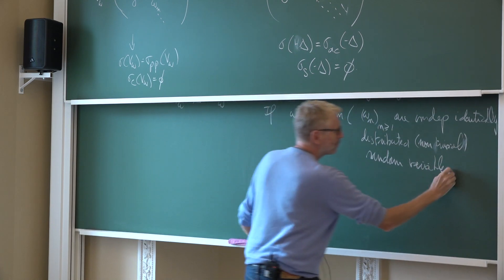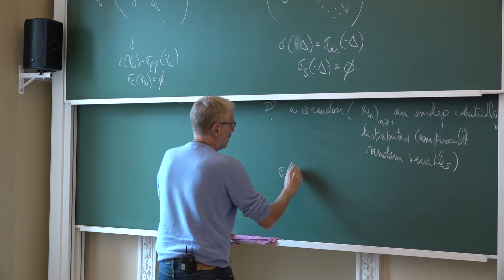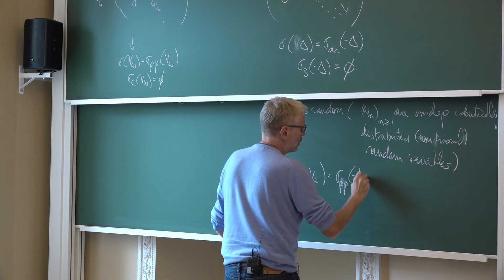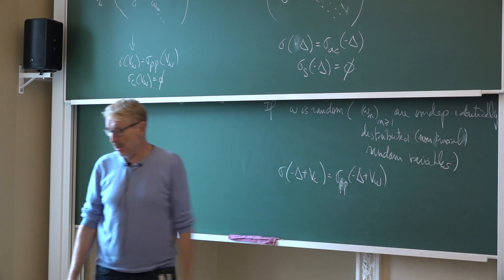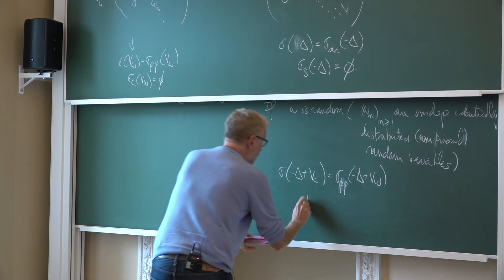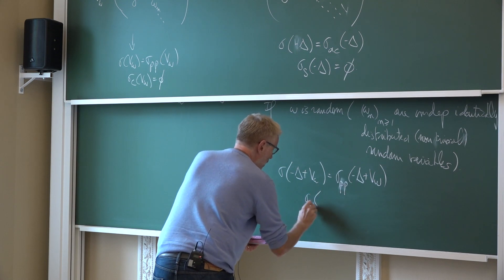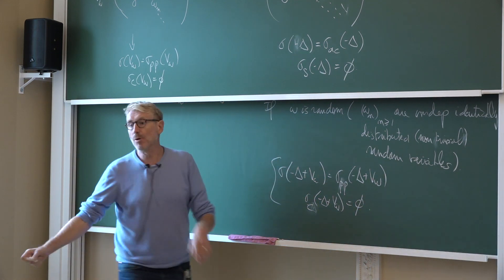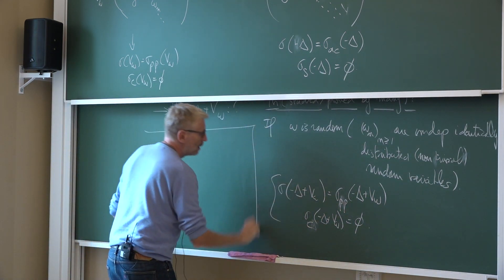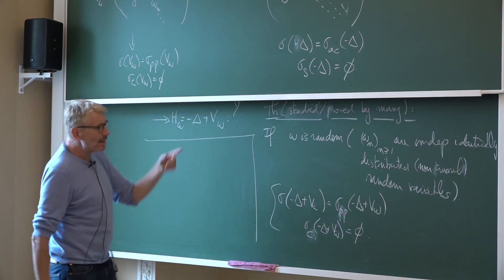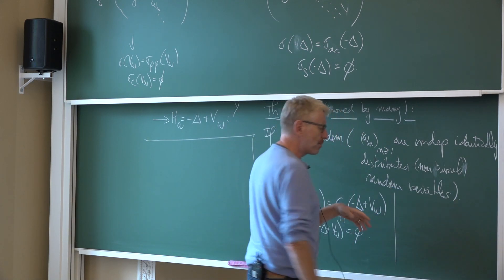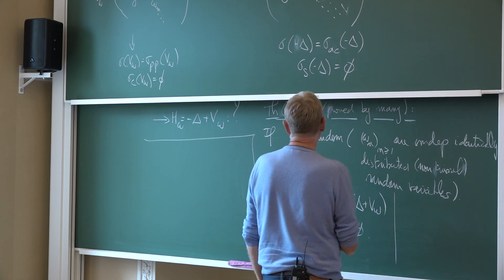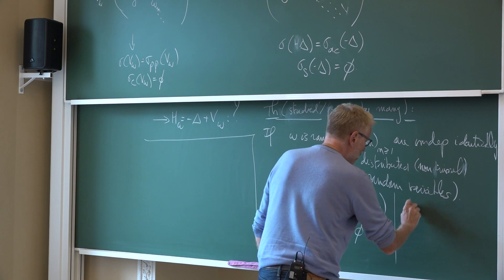They win: the spectrum of minus-Laplacian plus V_omega equals the pure point spectrum of minus-Laplacian plus V_omega, which is the closure of the set of eigenvalues, and the continuous spectrum is empty. In dimension one, this result in a precise form is due, I think, to Kunz and Suyar.